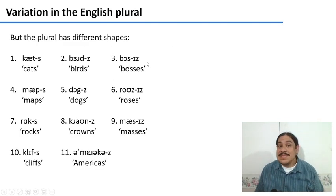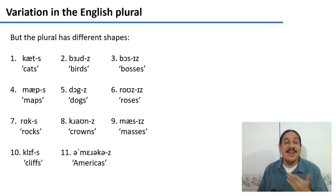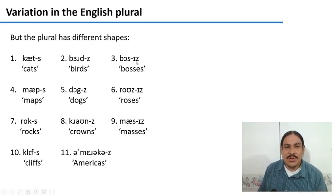But the plural doesn't always appear in the same way. If we look at the phonetic transcription of the words, you can see that sometimes the plural shows up as an S, like in cats, maps, rocks, and cliffs. And sometimes it's a Z, as in birds, dogs, crowns, and americas. By the way, if you want to verify, you can put your hand against your throat and say dogs and feel that there is vibration. It really is a Z. We also have words where the plural shows up as is, as in bosses, roses, and masses. So there's three different allomorphs for the plural.